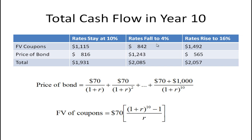If interest rates fall to 4%, the future value of the coupons will be much smaller, but the price of the bond goes up — since interest rates and bond prices move in opposite directions. It turns out you'll actually have more than you need: $2,085, so no problem paying the liability. If rates rise to 16%, you can reinvest coupons at a much higher rate, giving a much higher future value of coupons. The bond price will fall quite a bit, but the extra coupon income offsets that loss, and again you'll still have more than the $1,931 you need.